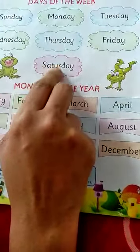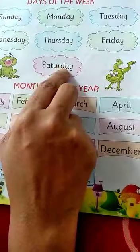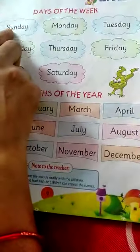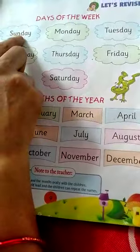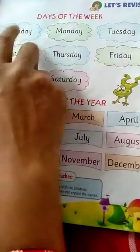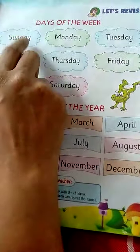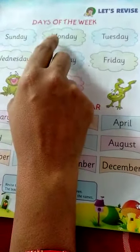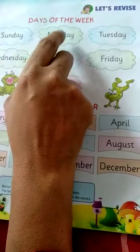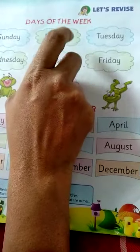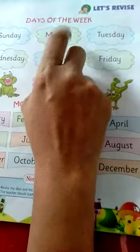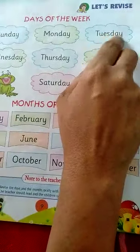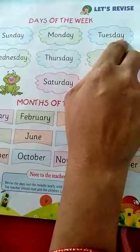I am repeating again. S-U-N-D-A-Y Sunday — Sunday means आपका रविवार होता है। M-O-N-D-A-Y Monday — Monday means आपका सोमवार। T-U-E-S-D-A-Y Tuesday — Tuesday means आपका मंगलवार।